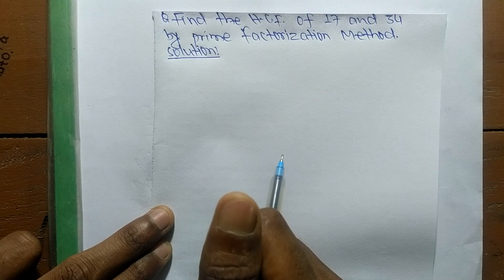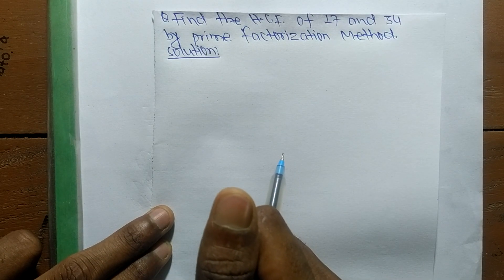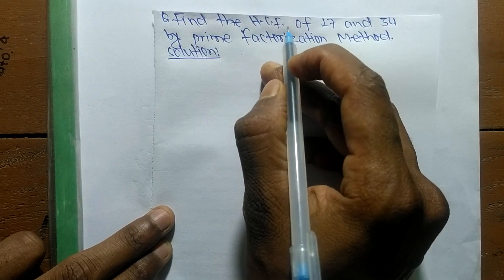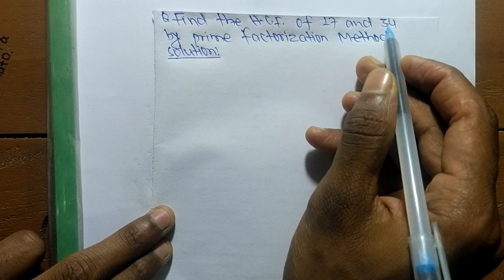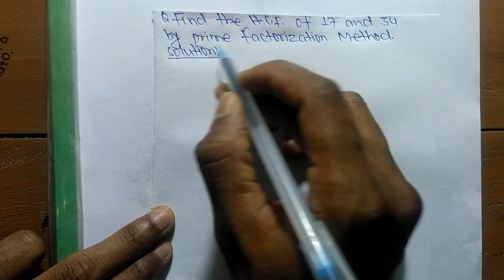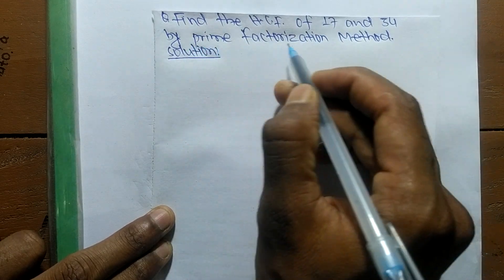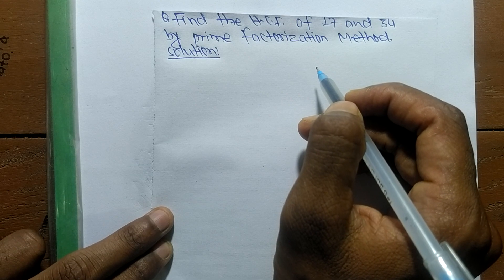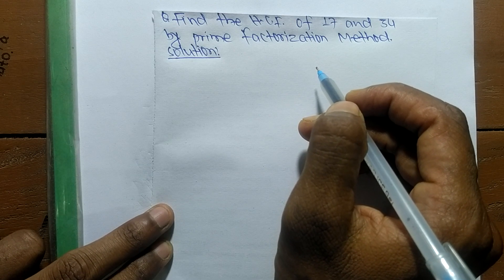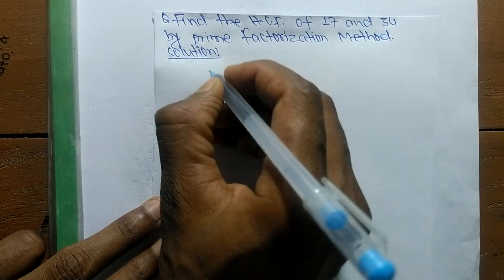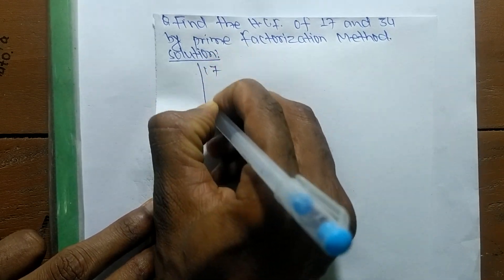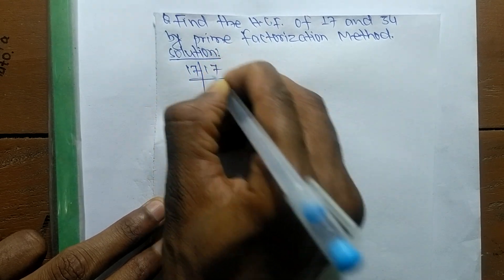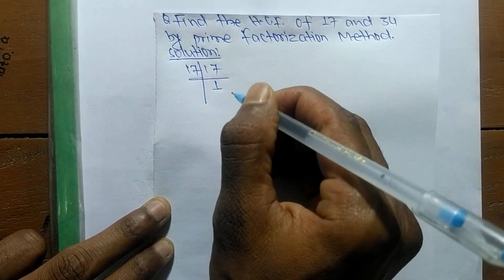Today in this video we shall learn to find the HCF of 17 and 34 by the prime factorization method. First of all, we find out the prime factors of 17. It is 17 times 1, which means it is 17.